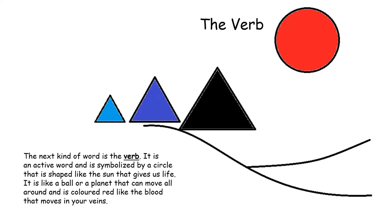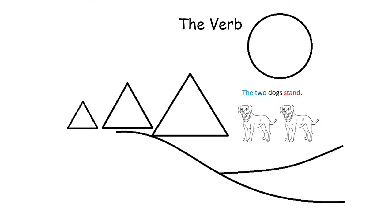The next kind of word is the verb. It is an active word and is symbolized by a circle that is shaped like the sun that gives us life. It is like a ball or planet that can move all around and is colored red like the blood that moves in your veins. You can see here that I've colored the word stand red. The word stand describes what the dogs are doing so it is a verb.